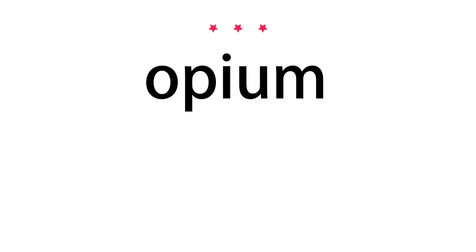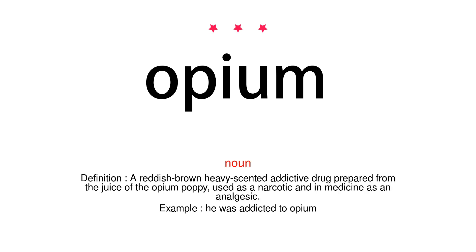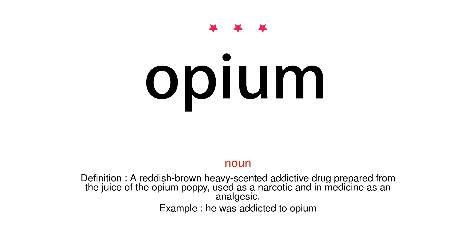Opium. Noun. Definition. A reddish-brown heavy-scented addictive drug prepared from the juice of the opium poppy, used as a narcotic and in medicine as an analgesic.